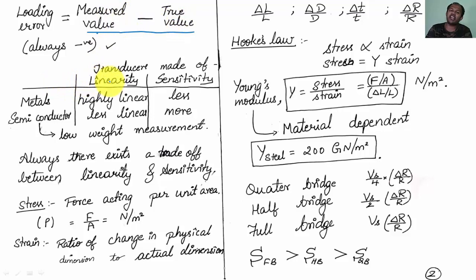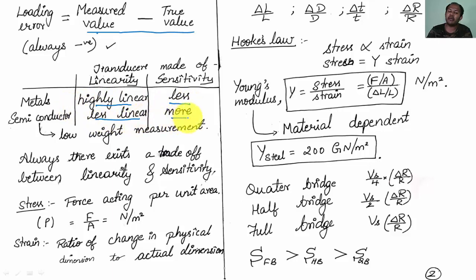These two things are very important. If you are designing a transducer, you can use a metal or a semiconductor. If you use a metal, you can achieve high linearity but sensitivity will be less. If you use a semiconductor transducer, linearity will be less but sensitivity will be more. So there always exists a trade-off between linearity and sensitivity. For heavy weight measurement, we use a metal transducer; for low weight measurement, we use a semiconductor transducer — for example, measuring gold.